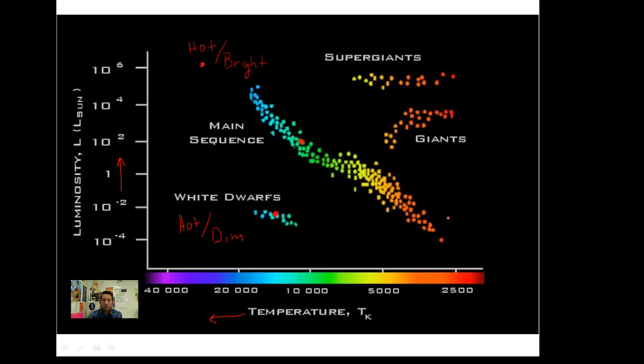Over here, 2,500 Kelvin. Cool. And we're low on the luminosity scale. We're cool and dim.